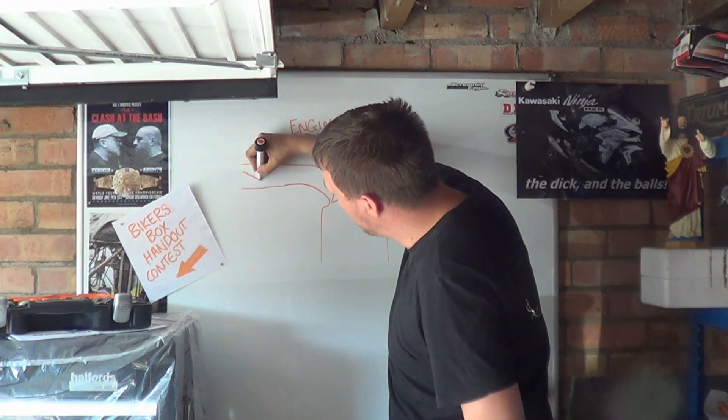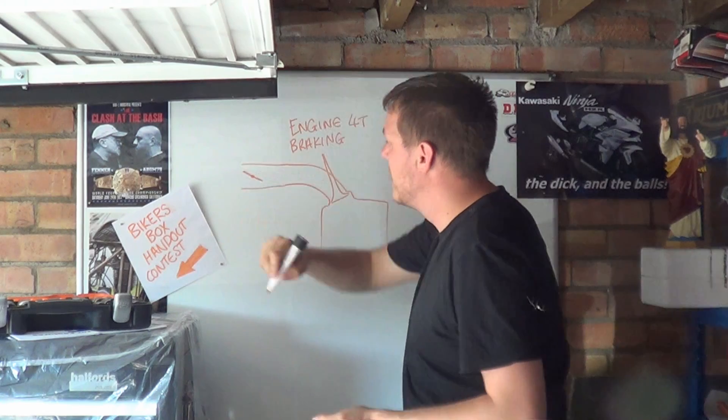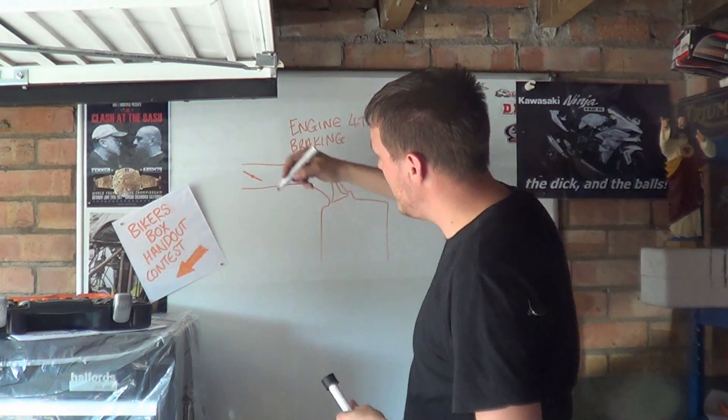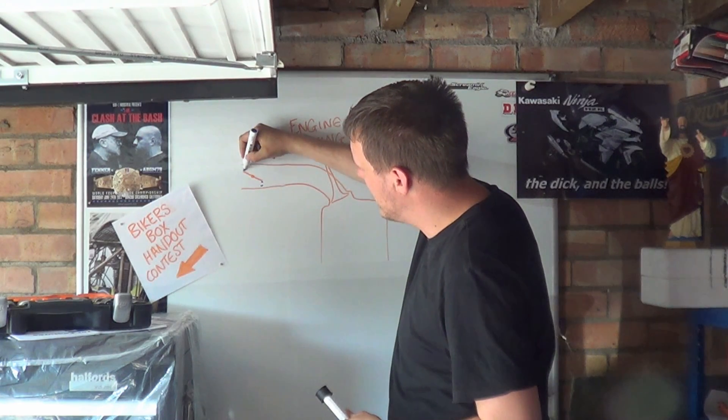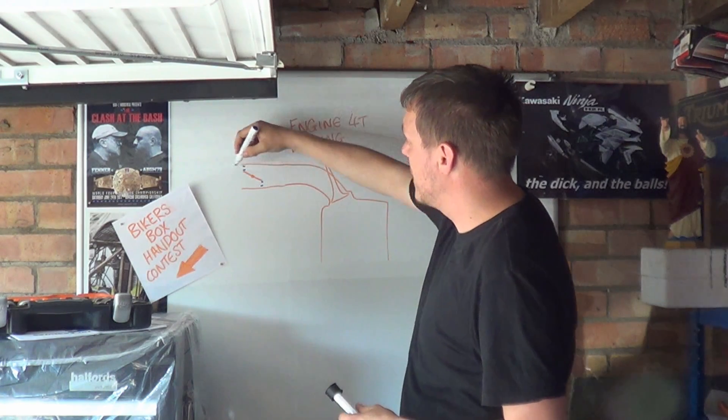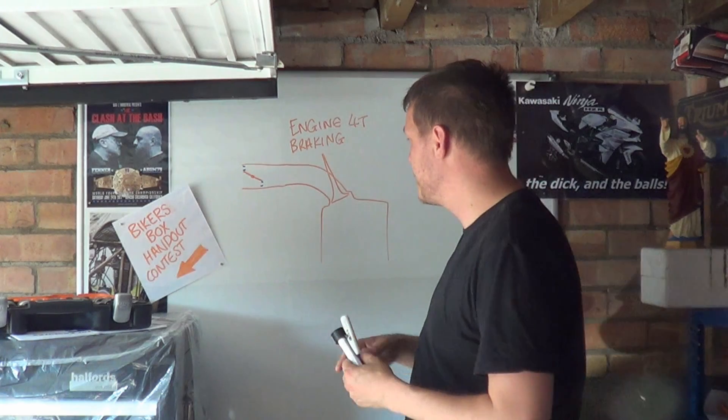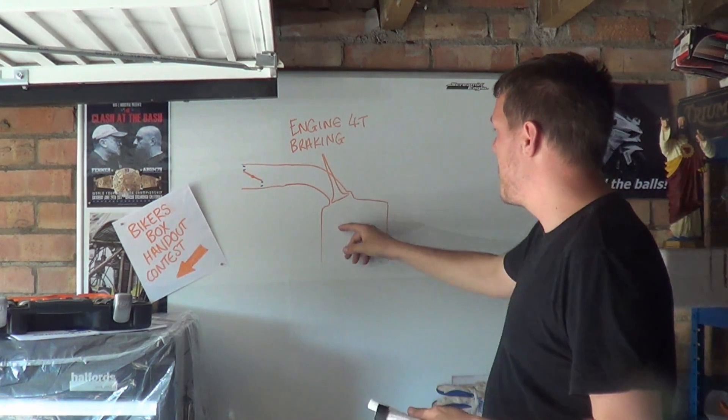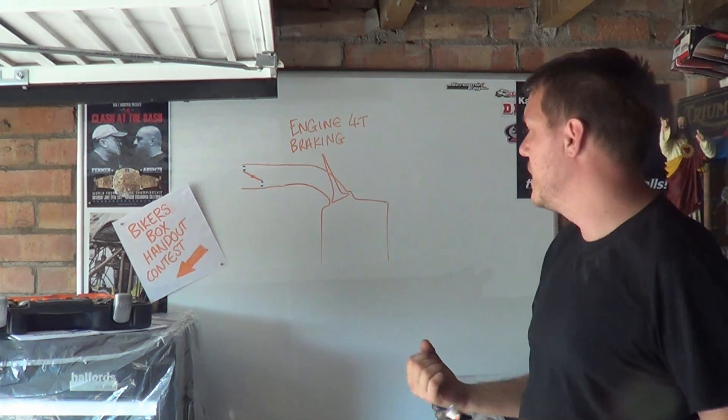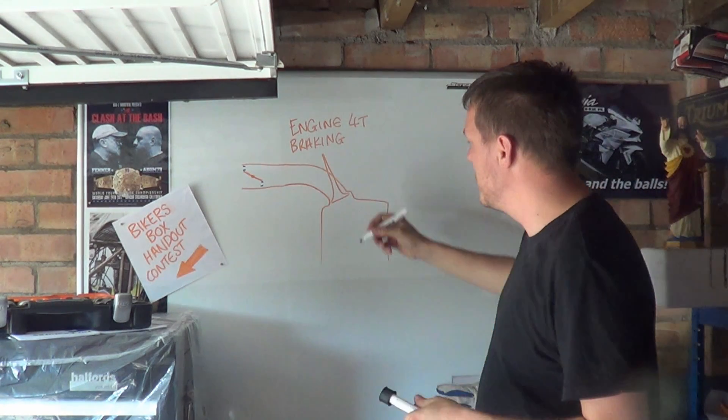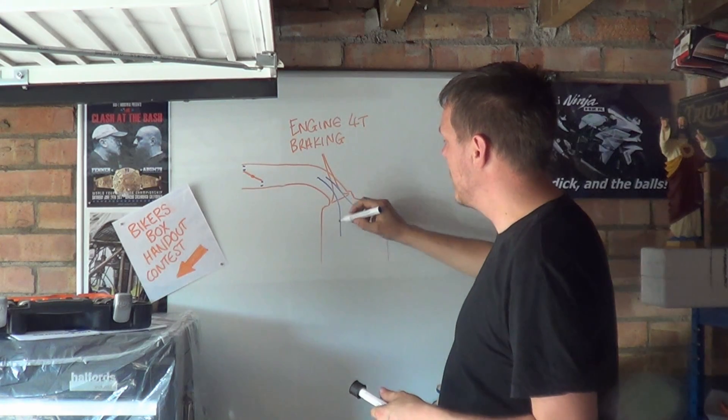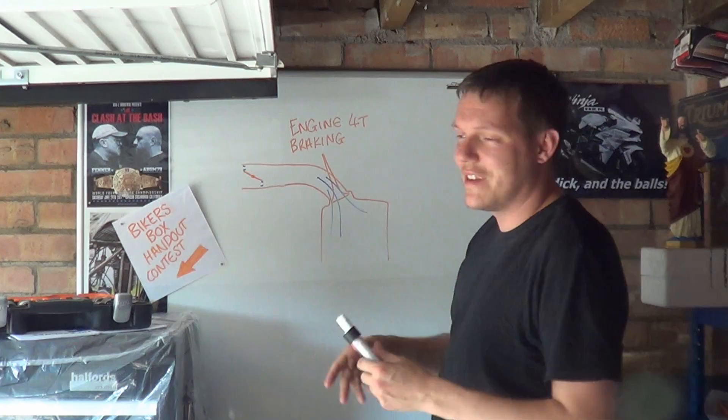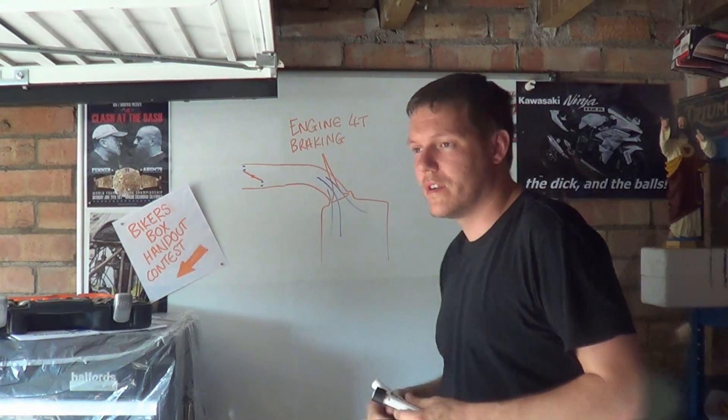So your throttle butterfly will be like this. There's a bit of a restriction here and a bit of a restriction here against the whole port area. What happens is normally in an engine, the inlet valve opens and all your air flows around your valve, not very well done obviously, flows around your valve and fills your cylinder.